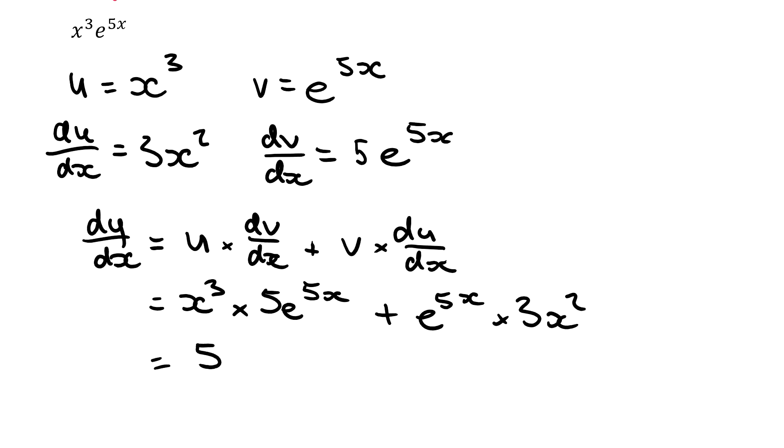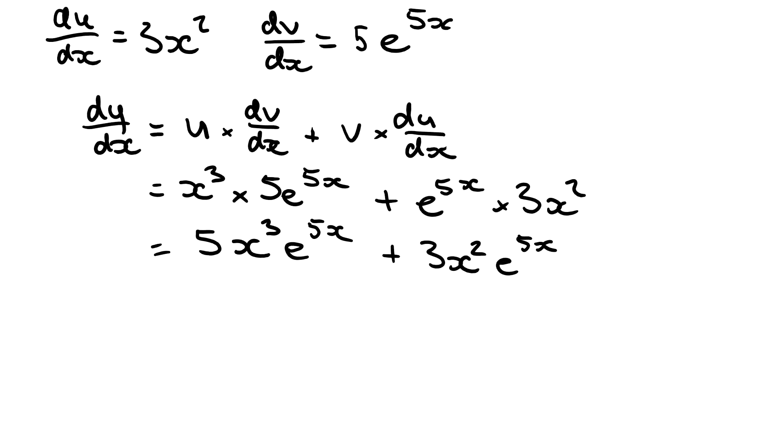So we get 5x to the power of 3 e to the power of 5x plus 3x squared e to the power of 5x. We can now bring out our common factors, which in our case will be x squared, as well as our e to the 5x, and then we're left with 5x plus 3.